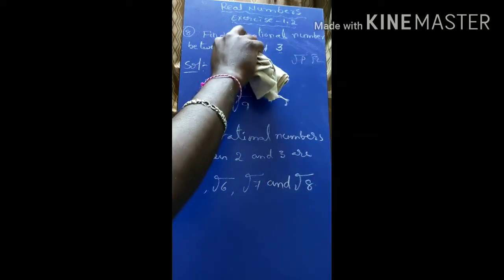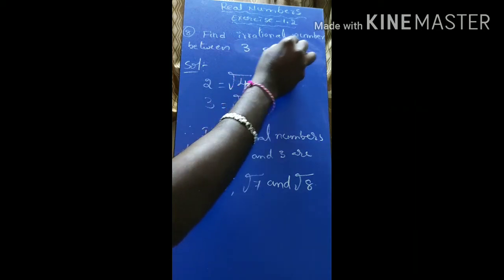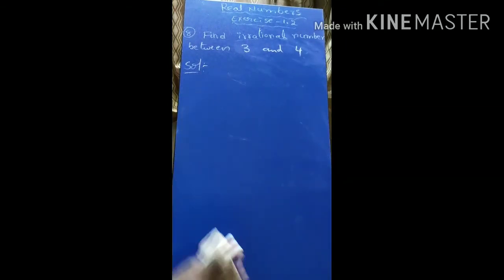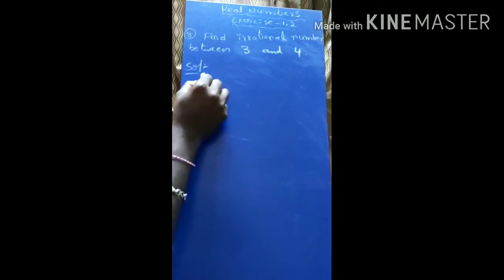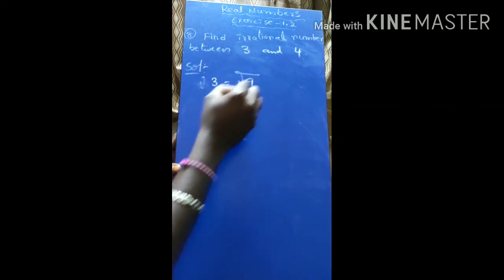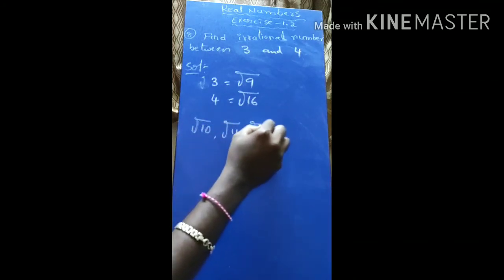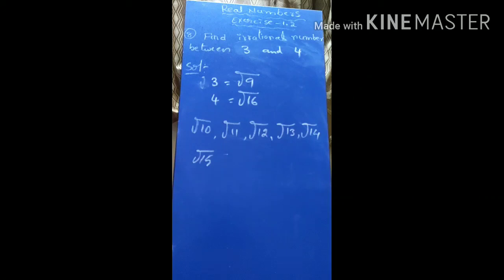If you want to write irrational numbers between 3 and 4, it is simple. That 3 will be converted into irrational form: 3 is equal to under root 9. That 4 is equal to under root 16. So the irrational numbers between 3 and 4 are: root 10, root 11, root 12, root 13, root 14, root 15. These are the irrational numbers between 3 and 4. It is a very simple method for finding irrational numbers.